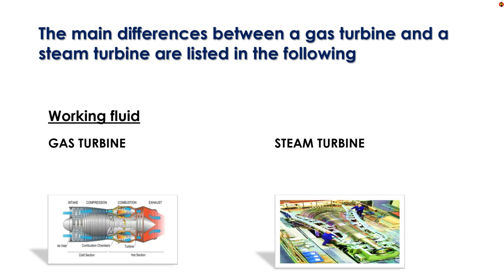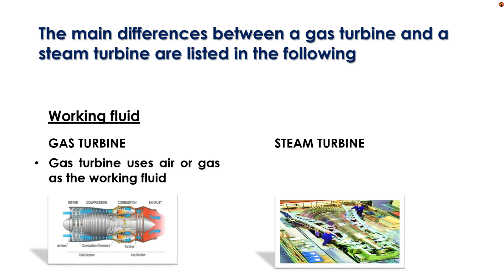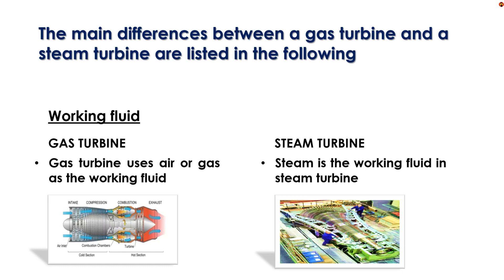Working fluid: Gas turbine uses air or gas as the working fluid. Steam turbine uses steam as the working fluid.